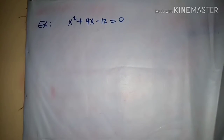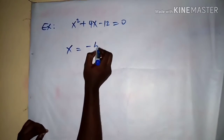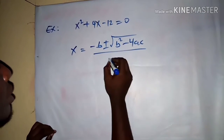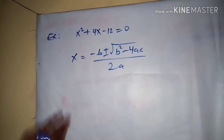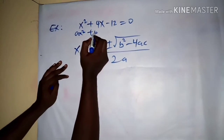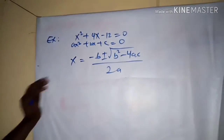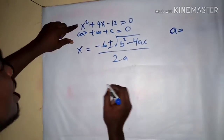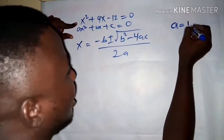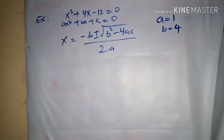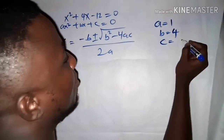Let me write the quadratic formula out again: x = (-b ± √(b² - 4ac)) / 2a. I compare my equation x² + 4x - 12 = 0 to the standard form ax² + bx + c = 0. From here, a = 1 because 1 × x² = x², b = 4 since that is the coefficient of x, and c = -12.